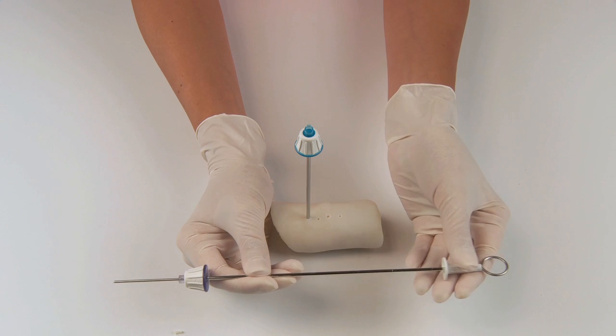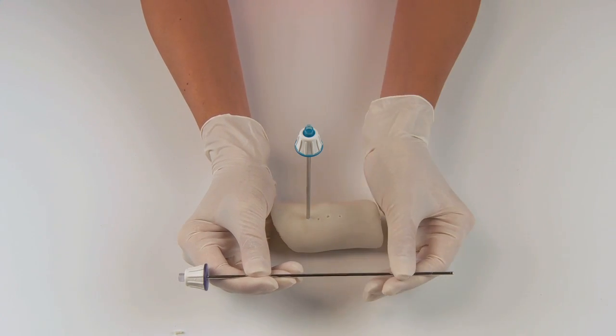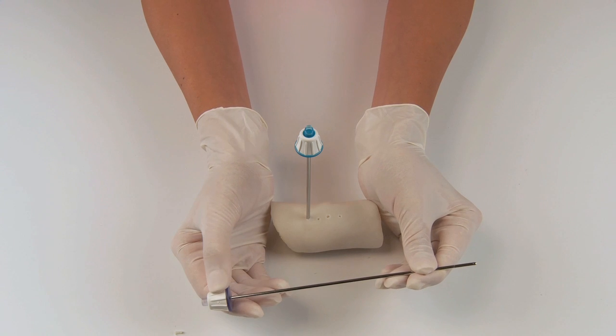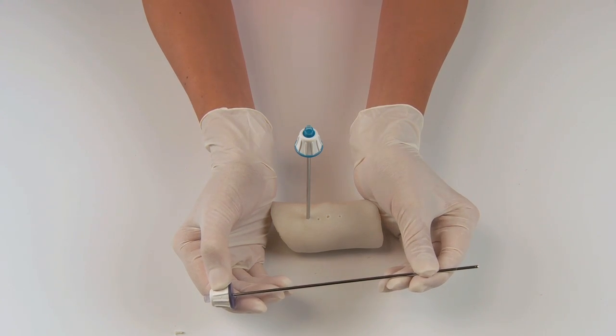It is important to note that the biopsy cannula is shaped like a cone. Therefore, the sample is pushed out through the lower opening of the cannula hub in order to avoid crushed artifacts.